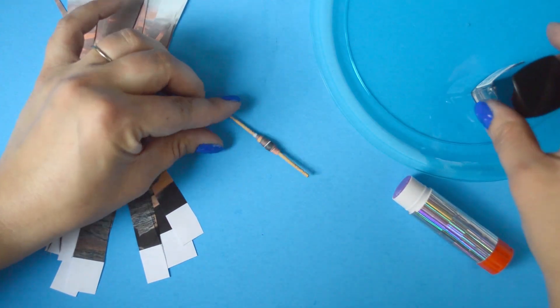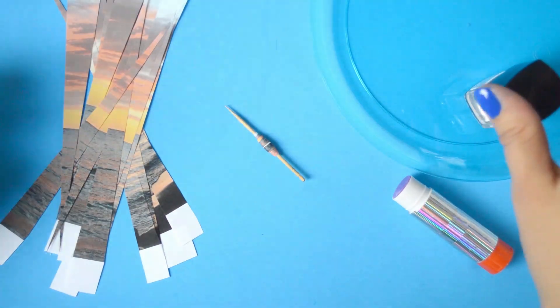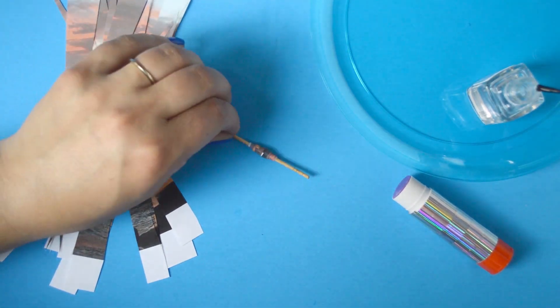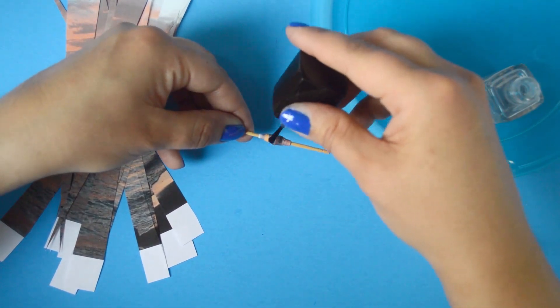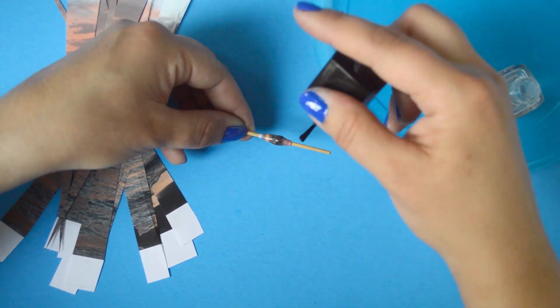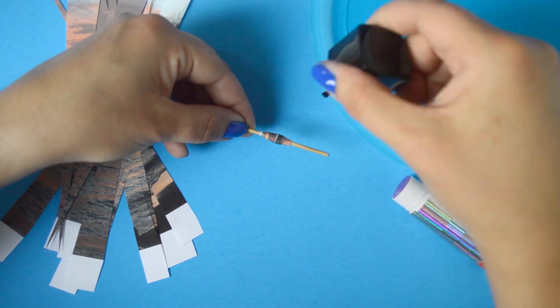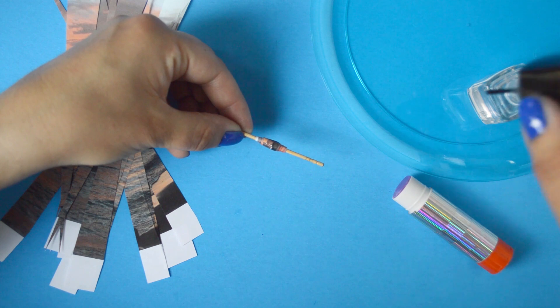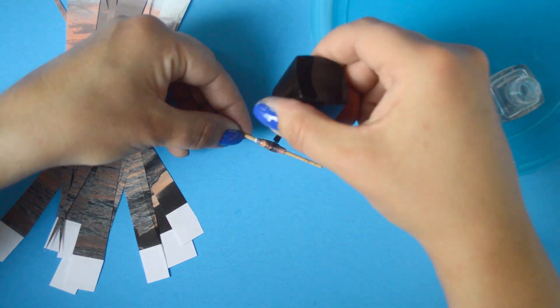you're going to want to take a clear sealer. You can use Mod Podge, you can use a spray acrylic sealer, or if you have some clear nail polish at home, that works perfectly well. So go ahead and coat the entire bead while it's still on the toothpick or skewer. And then once you have it completely coated with your sealant, you can slide it off of the toothpick and set it aside to dry.